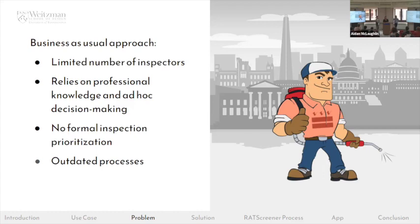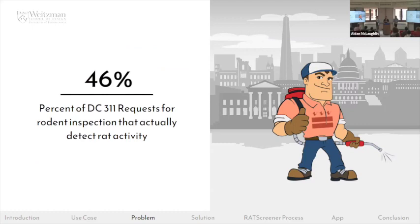In 2021 alone, DC received over 12,000 requests for rodent inspections, but they only had eight vermin inspectors. The current approach is really inefficient: inspectors can't keep up with the sheer quantity of daily requests, they rely on personal knowledge and ad hoc decision making, and aren't able to formally prioritize requests. A lot of record keeping is done on pen and paper. Even these knowledgeable inspectors find that only 46% of requests actually lead to rat detection when an inspector arrives.